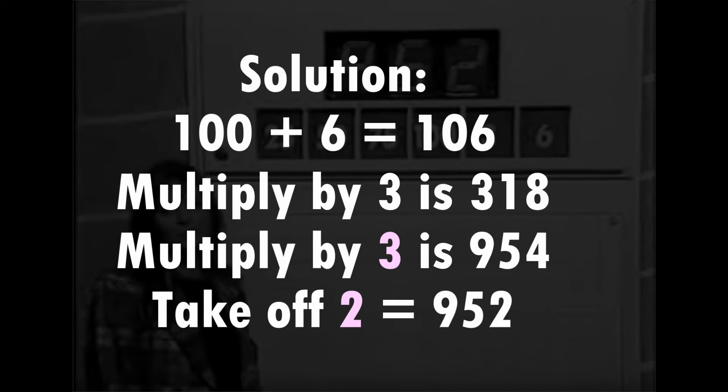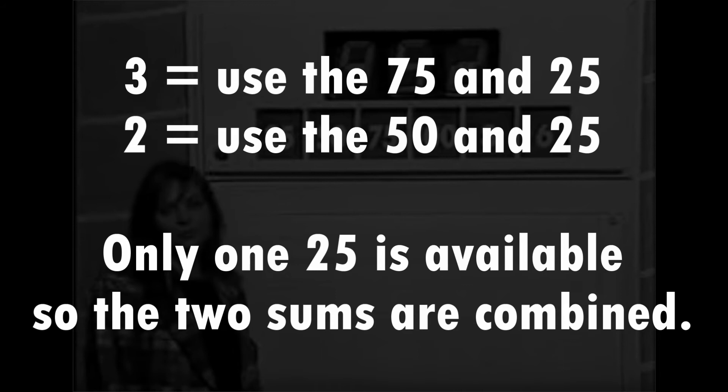So these highlighted numbers here are the numbers that we need to make from the large numbers. We need a 3 and we need a 2. Now we can do that quite easily. We know that 3, we can use the 75 and the 25 to make it, and we know that 2, we can use the 50 and the 25 to make it. The problem is we've only got one 25, so we need to do the two pieces of maths at the same time.